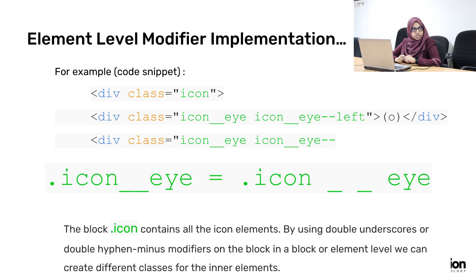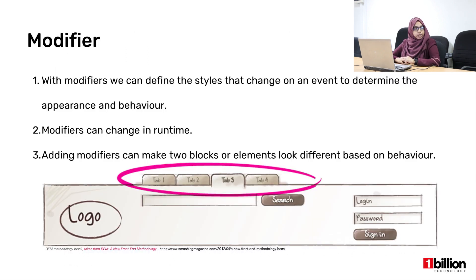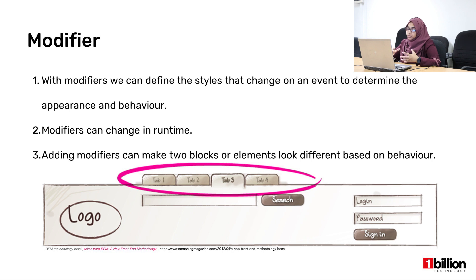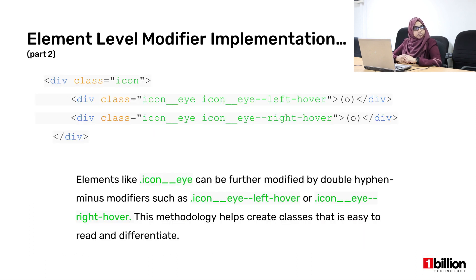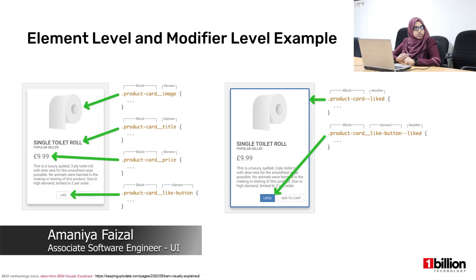A modifier is where you want to change the styles of an element or a block because of appearance or behavior on the site — this would change during runtime. After a button is clicked, the modifier class would be called. For example in the menu block, tab three has been clicked and the styles have changed. In that instance, for the element tab we would give the modifier 'click' or 'active'. You can also see the icon i element has a modifier of 'left-hover' — when hovering, the modifier class changes the styles of the icon.